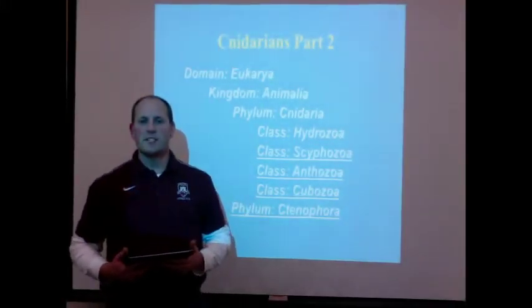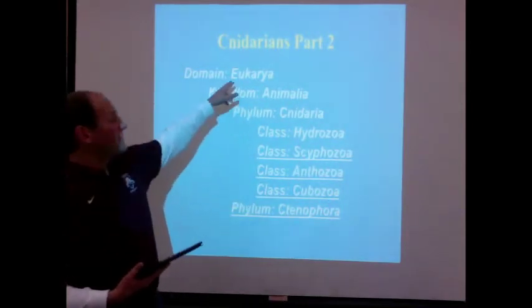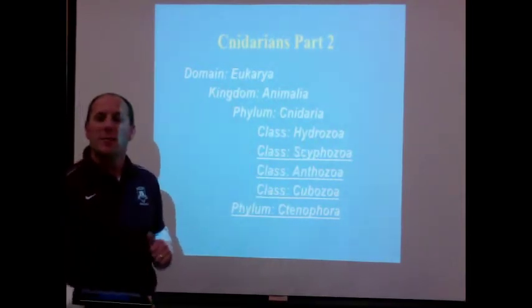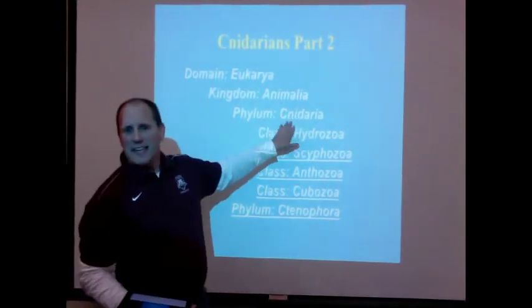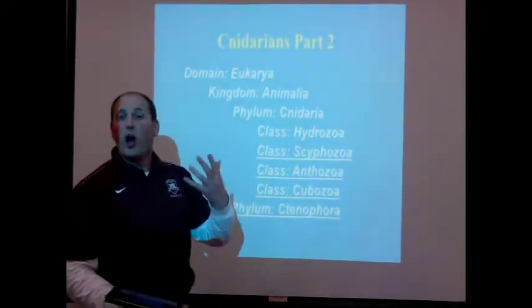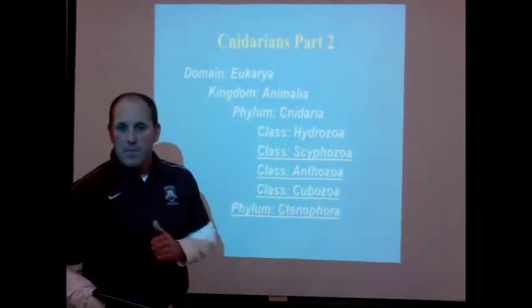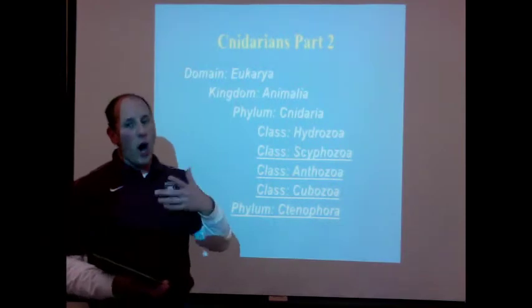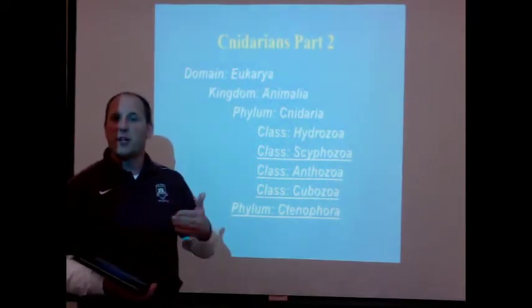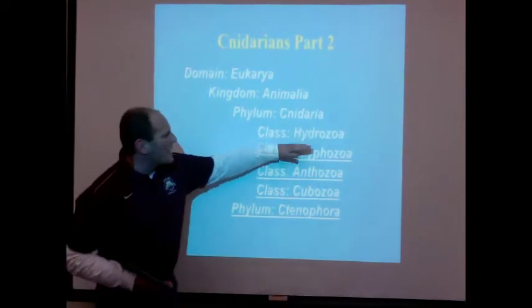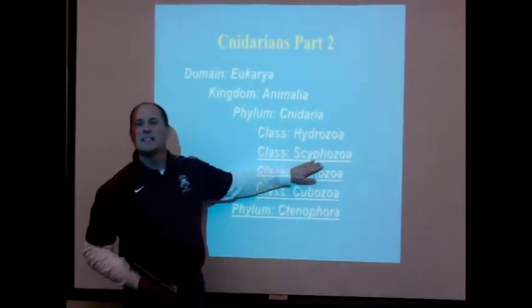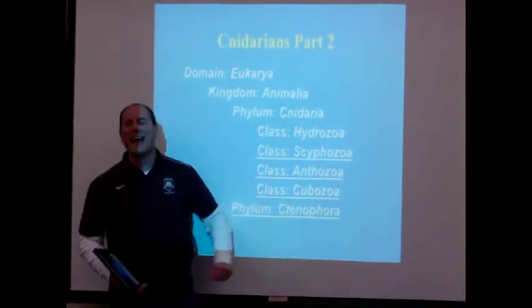We are going to be starting our second set of notes on the Cnidarians. We are in the same domain — make sure you get this information down, extremely important — the domain Eukarya. The kingdom is Animalia, the phylum Cnidaria, C-N-I-D-A-R-I-A. Last time we talked about the characteristics of all organisms in this phylum. Today we are going to look at the class Scyphozoa, Anthozoa, and the class Cubozoa.